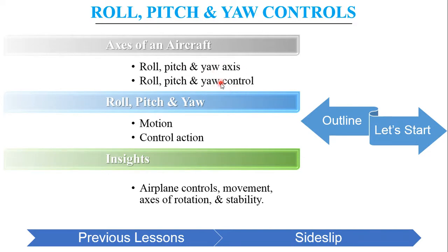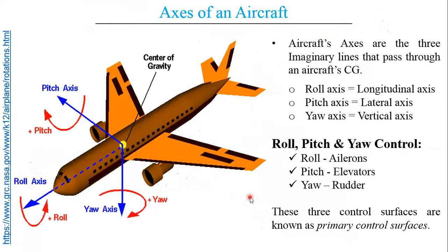Then we will be knowing about how to control these axes. Further we will be moving on to the description of these individual motions — Roll, Pitch and Yaw — and the control action particular to each of them. We will also be getting some insights about airplane controls, movement, axis of rotation and stability.